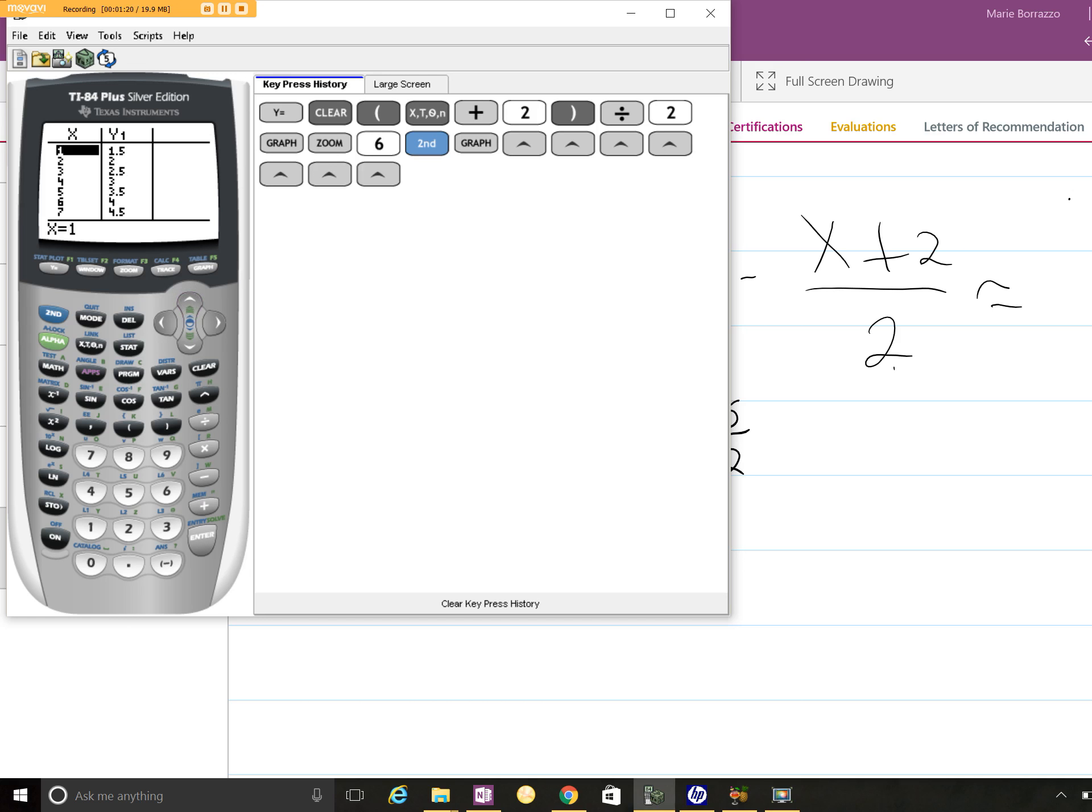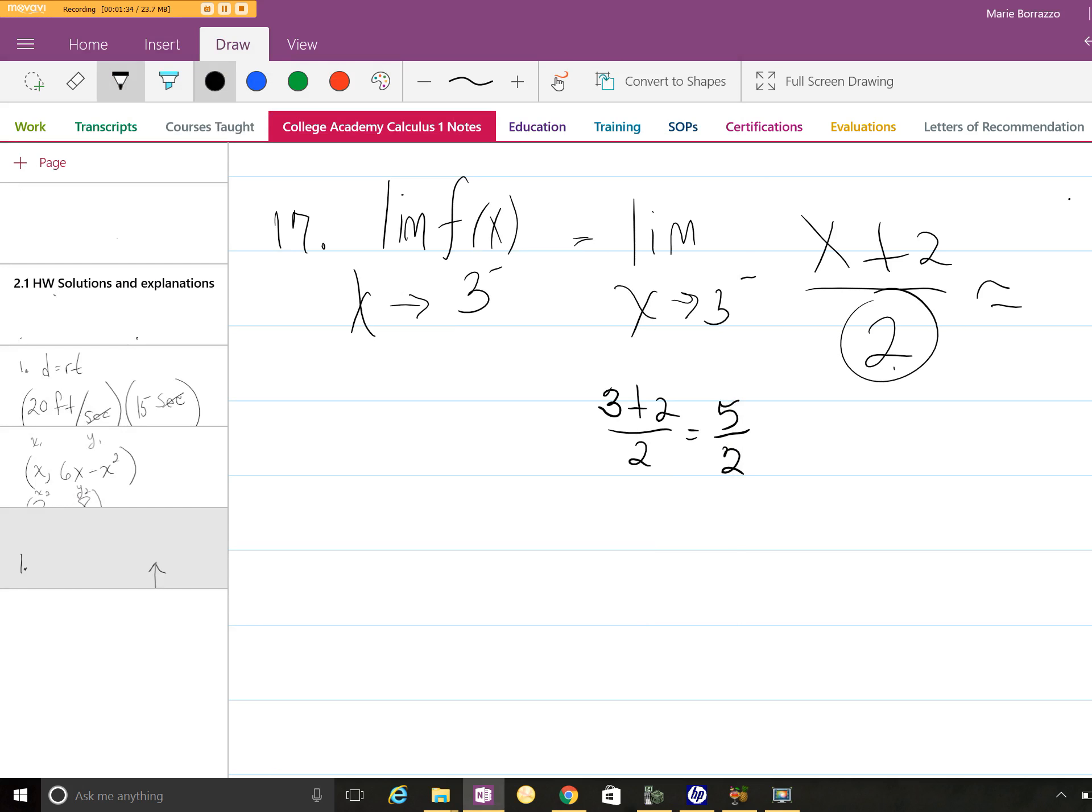And so at (3, 2.5), this is going to be a continuous point for us, despite the fact that we have (x + 2) / 2. And you know that because 2 is a constant anyway, so it wouldn't make a difference.